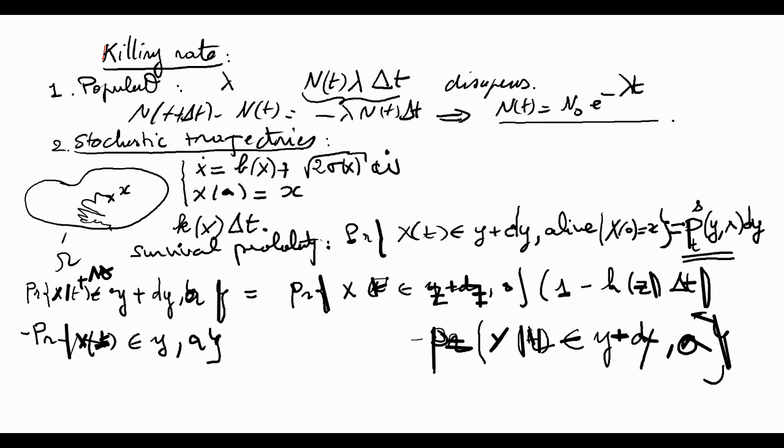Now we are going to continue in the next class by dividing everything by delta t and sending delta t to zero. And the same here, we'll divide everything by delta t and send delta t to zero, and see what is going to be the limit. So we'll resume in the next class.